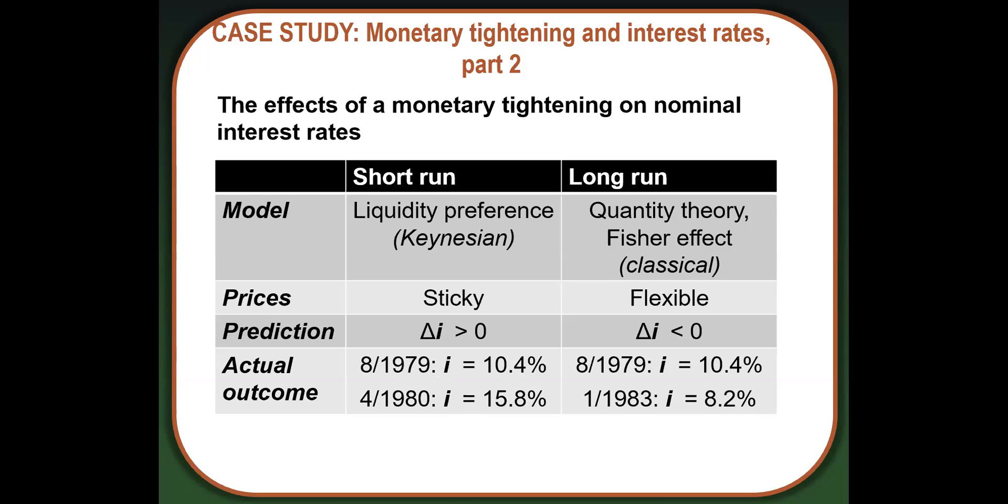But over time, as inflation came down, because of that Fisher equation, which says the nominal interest rate is the real interest rate plus inflation, when inflation decreased, that naturally decreased nominal interest rates. So as prices became more flexible, our prediction was that the nominal interest rate would fall. And that's exactly what we saw. We saw that the nominal interest rate in 1979 was 10%. By 1980, it was 16%. But by 1983, when inflation had fallen really significantly, the nominal interest rate had fallen as well. The nominal interest rate was down below 10% to about 8%. So it looks like the Fed was able to control the money supply, and that controlled interest rates. And by controlling interest rates, they were able to control inflation in this episode in the 1980s.